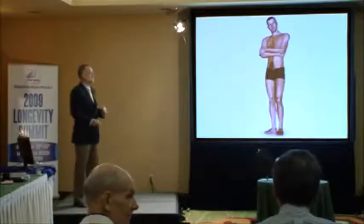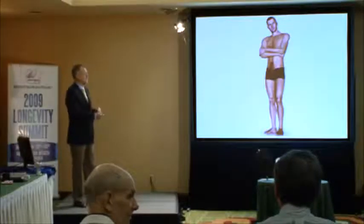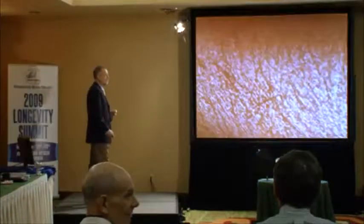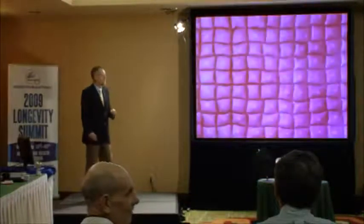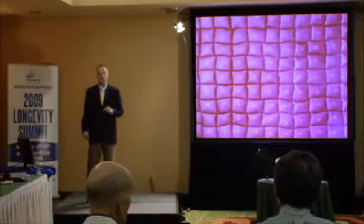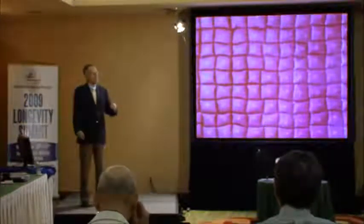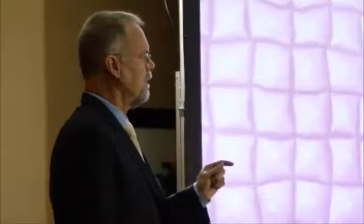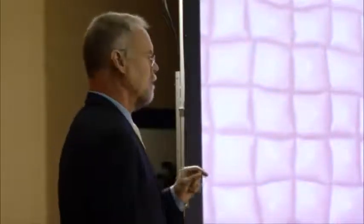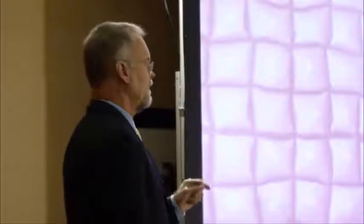In order to explain what a telomere is, I'd like to first zoom in on a human being. We see that a human is made up of a hundred trillion cells. There are a lot of theories about why we age, and a lot of them say that we age because our cells age. So if we can find a way to control the aging process in our cells, this should be a way of controlling the aging in us.